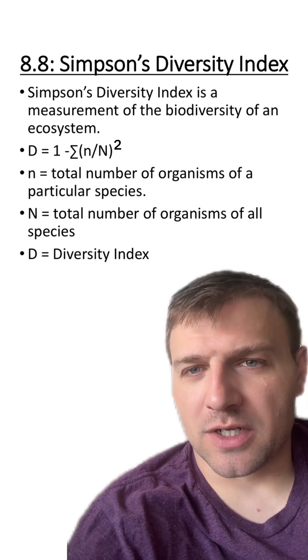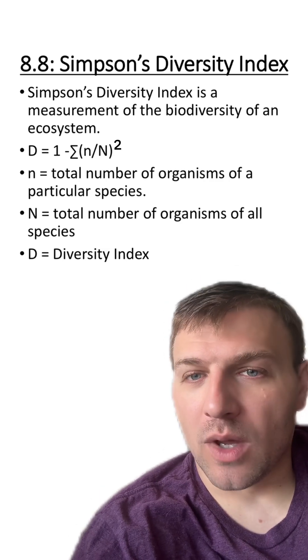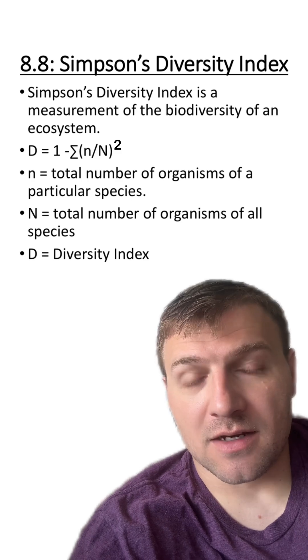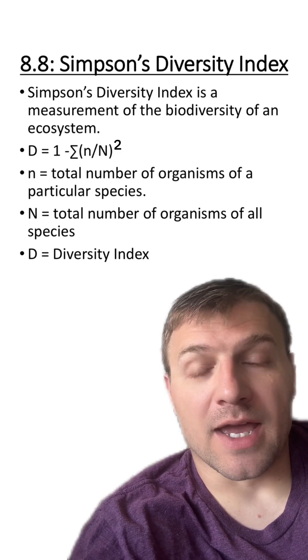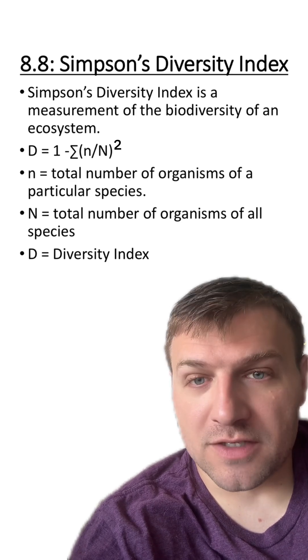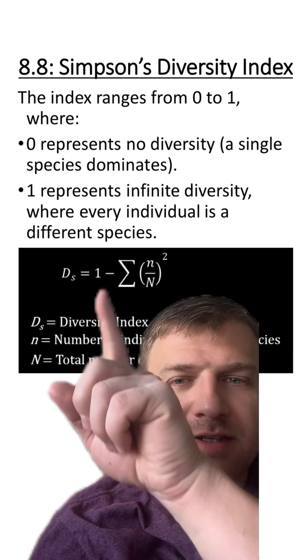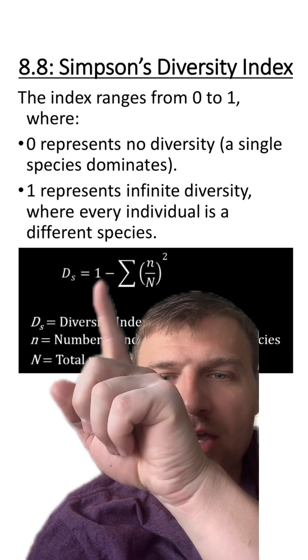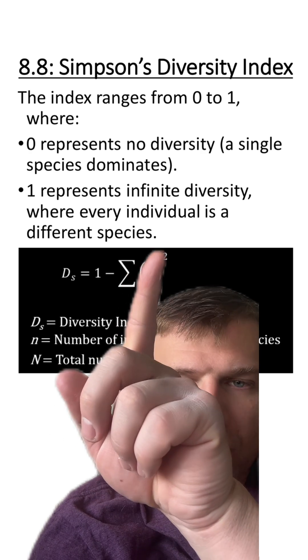You can see the equation that we're going to use. D is going to stand for the diversity index. In the equation, we take one minus the sum of n, which is the total number of organisms for a particular species, divided by a capital N, which is the total number of organisms of all the species. And then we're going to square it. This is a better way of looking at it. You can see this is the biodiversity index, one minus the sum of the lowercase n divided by the uppercase N squared.